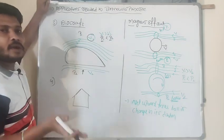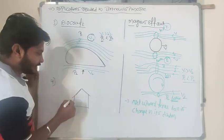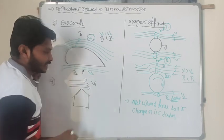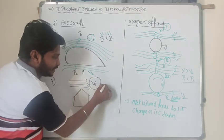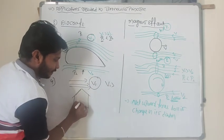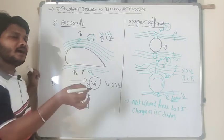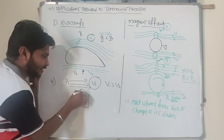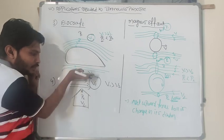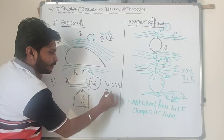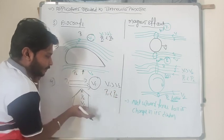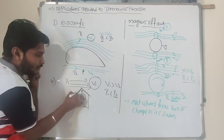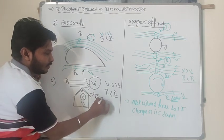One more example: the roof of a house flying away during a storm. Air moves with velocity V1 on top of the roof. V1 is greater than V2 below the roof. So pressure P2 inside is greater than P1 outside on top. As a result of more pressure P2 from below, it lifts the roof in the upward direction. This is also due to Bernoulli's principle.